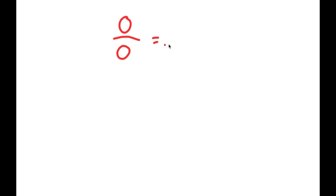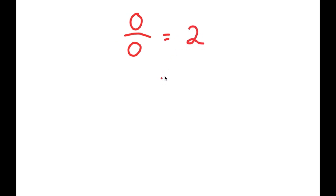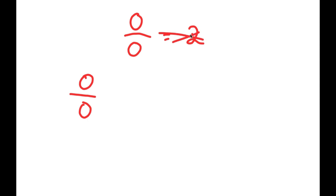In this video, I'm going to be proving that 0 divided by 0 is equal to 2. So how am I going to prove this? Well, let's first start by writing out 0 over 0. We're going to ignore the equals 2 for a moment and just start with 0 over 0.